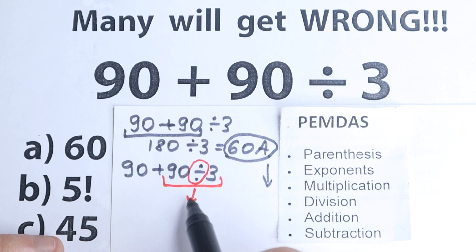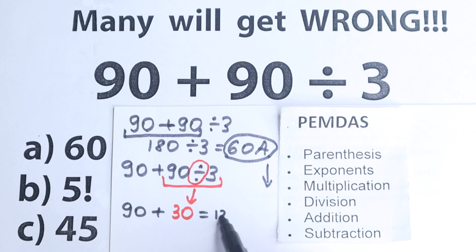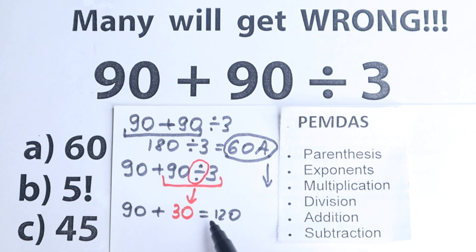So let's divide right here. 90 divided by 3 equal to 30 and we still have this 90. So we have 90 plus 30 equal to 120. So we have this answer right here.